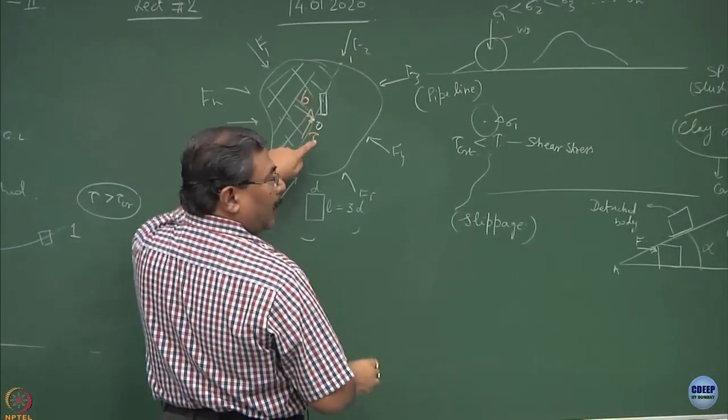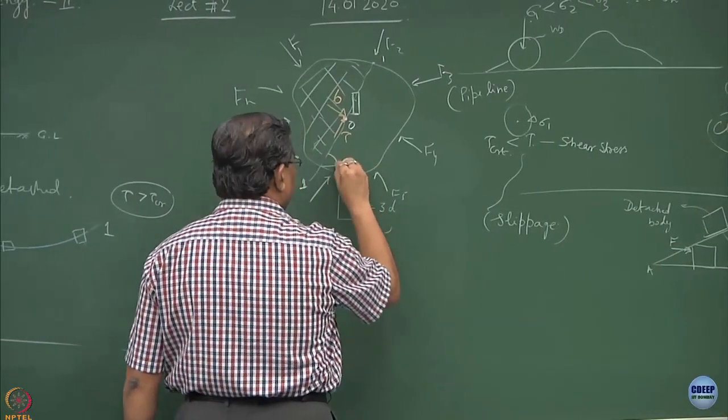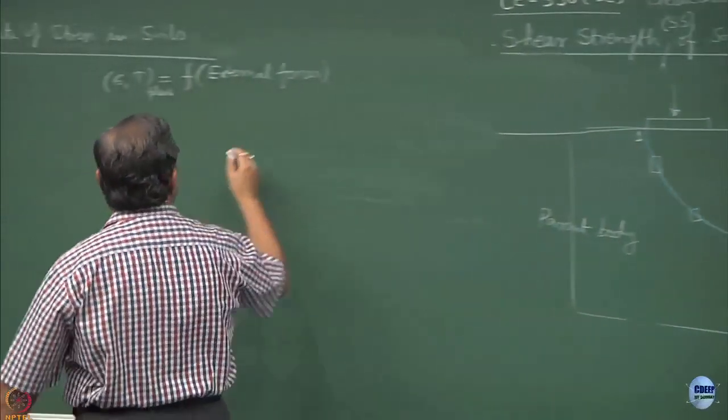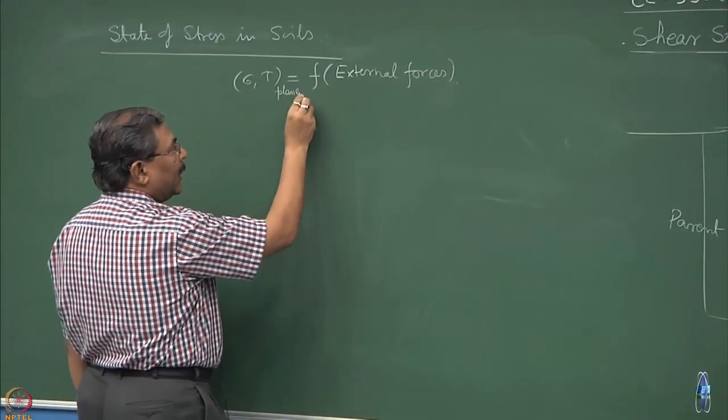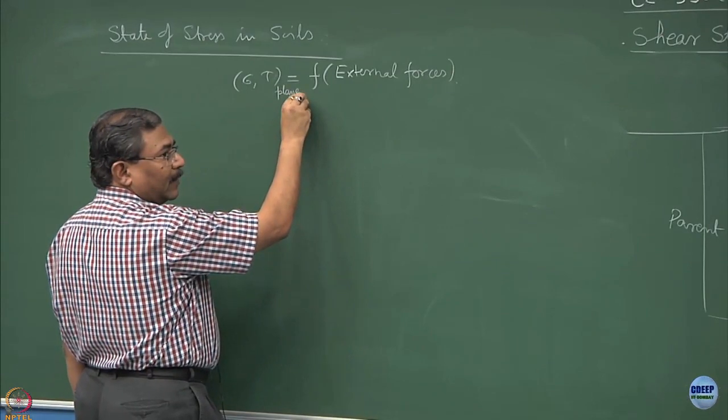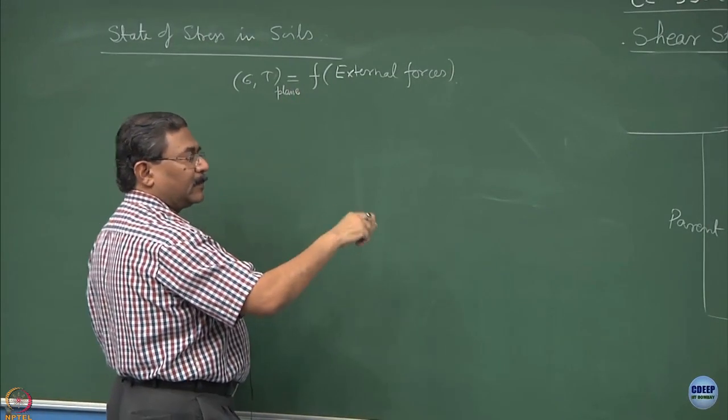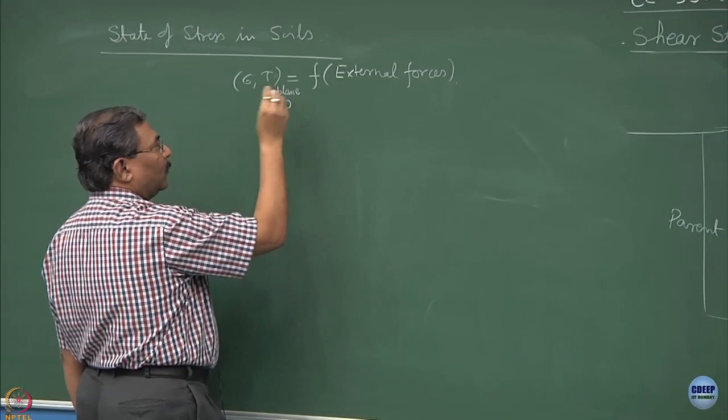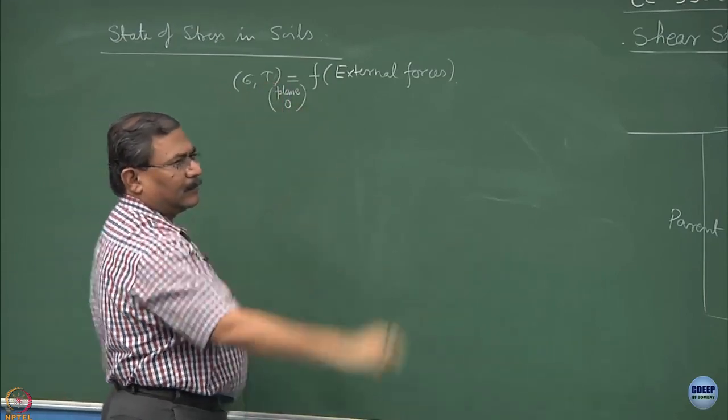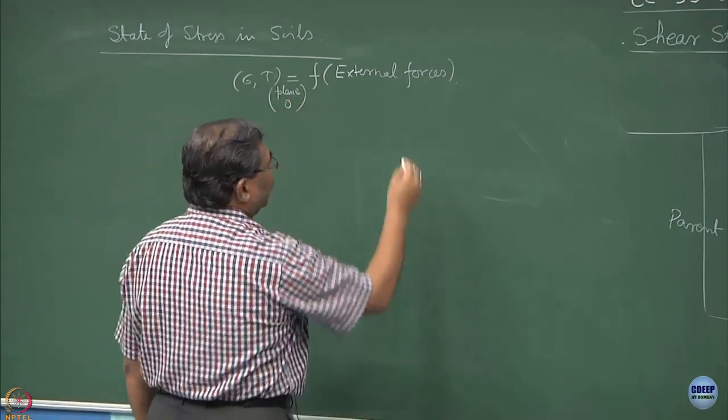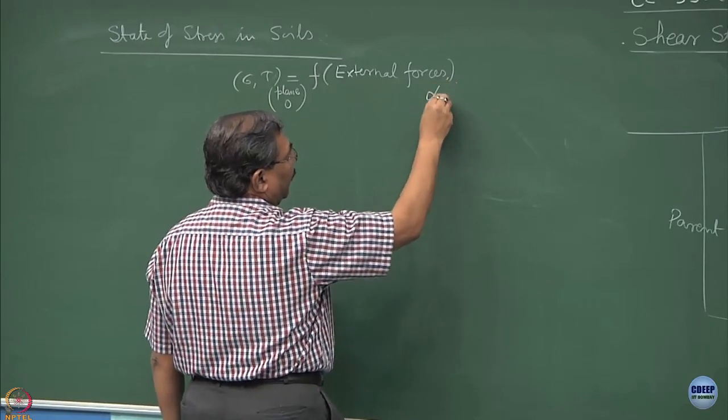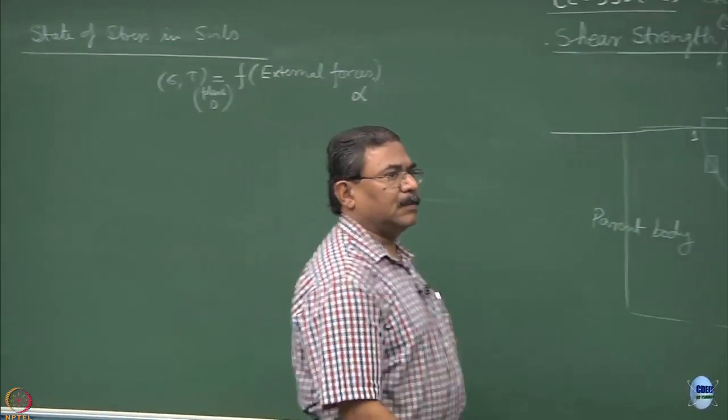Sigma tau acting at alpha. Plane indicates alpha value and then there has to be a point. Point O, external forces, and alpha is the statement of the problem clear.